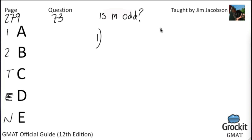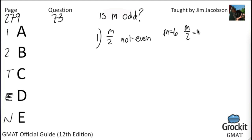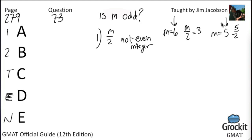Statement 1: M divided by 2 is not an even integer. On the surface, it sounds like it ought to guarantee that M is odd. But if M equals 6, then M over 2 equals 3 — not an even integer, yet M is even. And if M equals 5, then 5/2 isn't even an integer at all. Since the answer is sometimes yes and sometimes no, statement 1 is not sufficient. We can eliminate answer choices A and D.